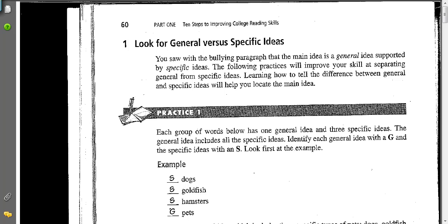General is a big idea. Specific is a very narrow or focused idea. The exercise in your book on page 60 asks you to identify one general idea and the three specific ideas that support it. For example, the general idea is pets and the three supporting ideas are dogs, goldfish, and hamsters.